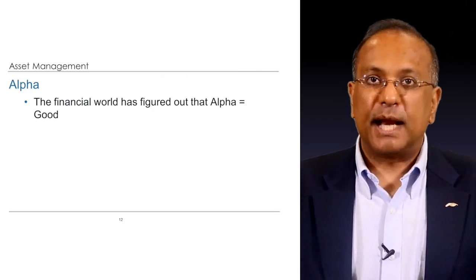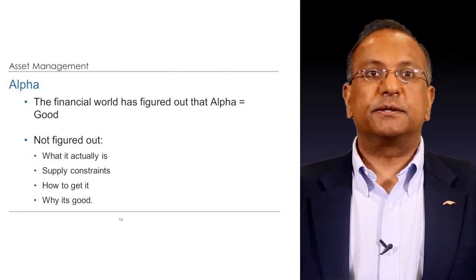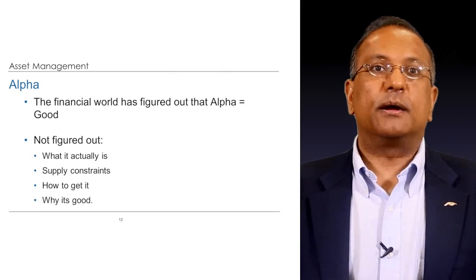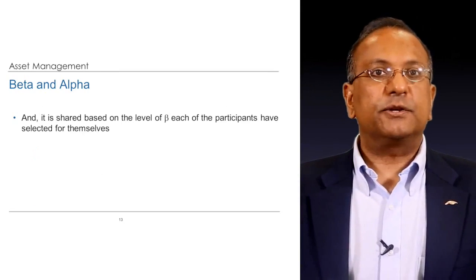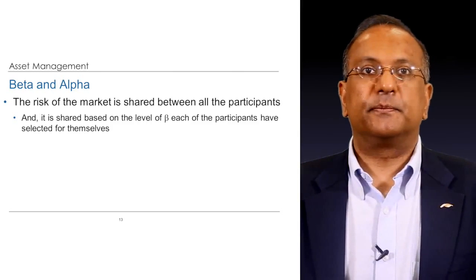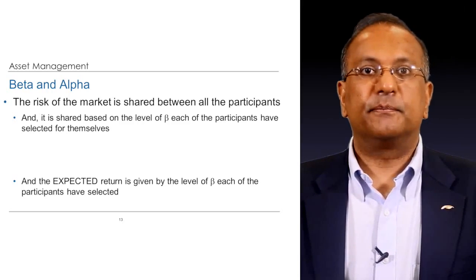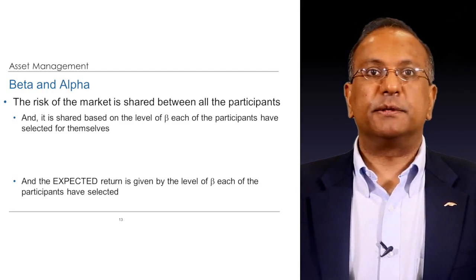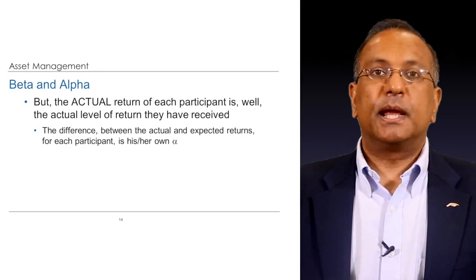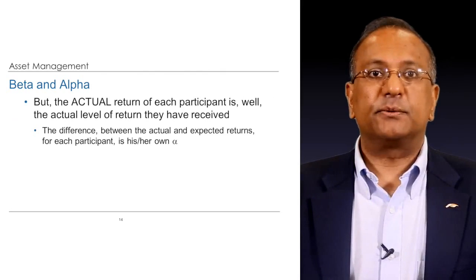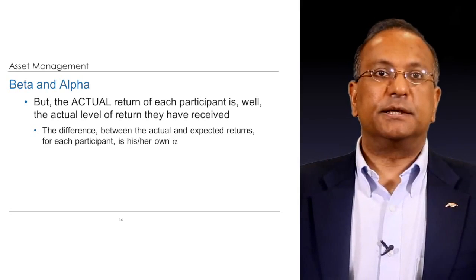The financial world has figured out that alpha is good, but they've not actually figured out what it actually is, whether there are supply constraints, how to get it, and why it's good. So let's clarify some of these concepts. The risk of the market is shared between all participants based on the level of beta each participant has selected. The return of the market is also shared between all participants, and the expected return is given by each participant's beta. But the actual return of each participant is the actual return they receive, and the difference between the actual and expected return for each participant is his or her alpha.